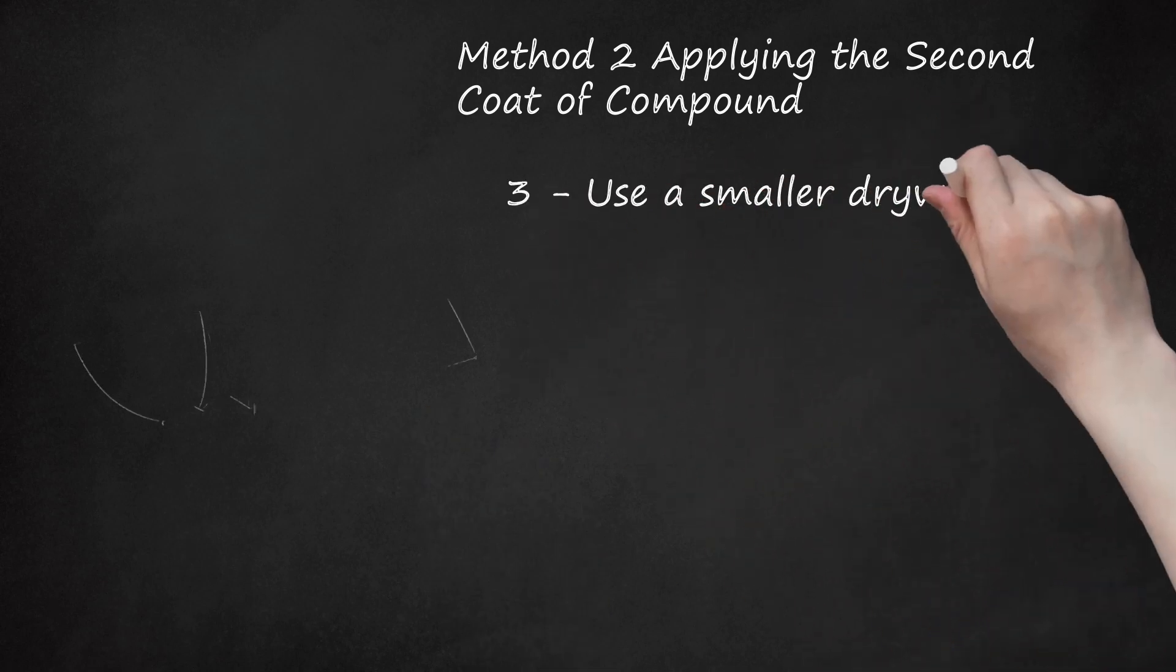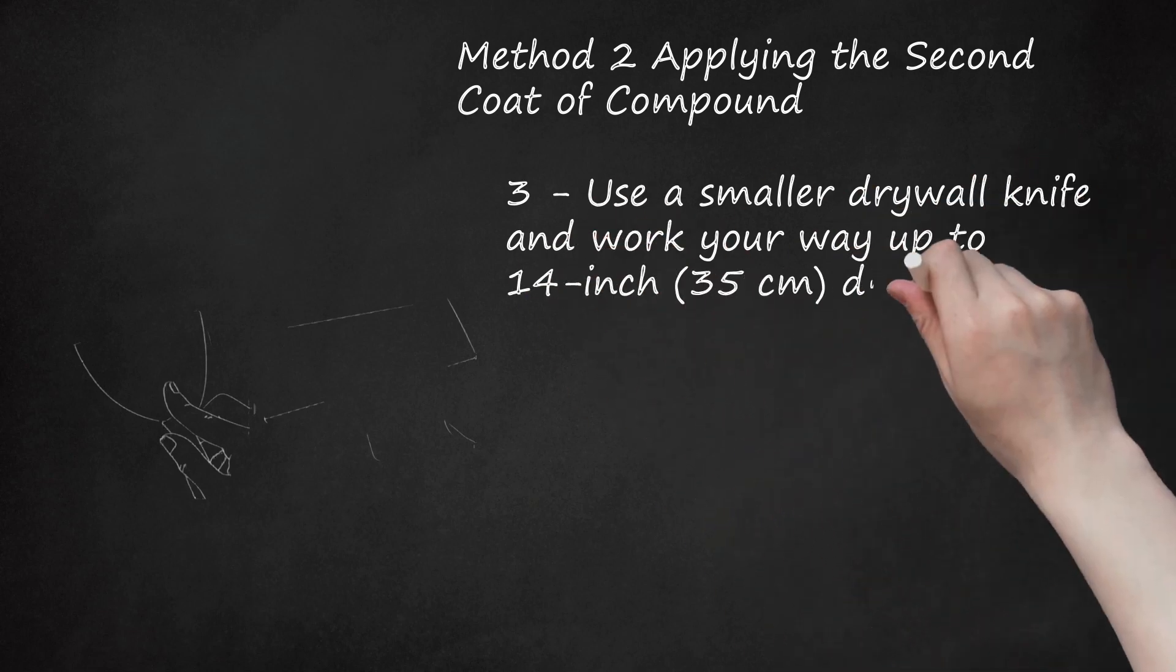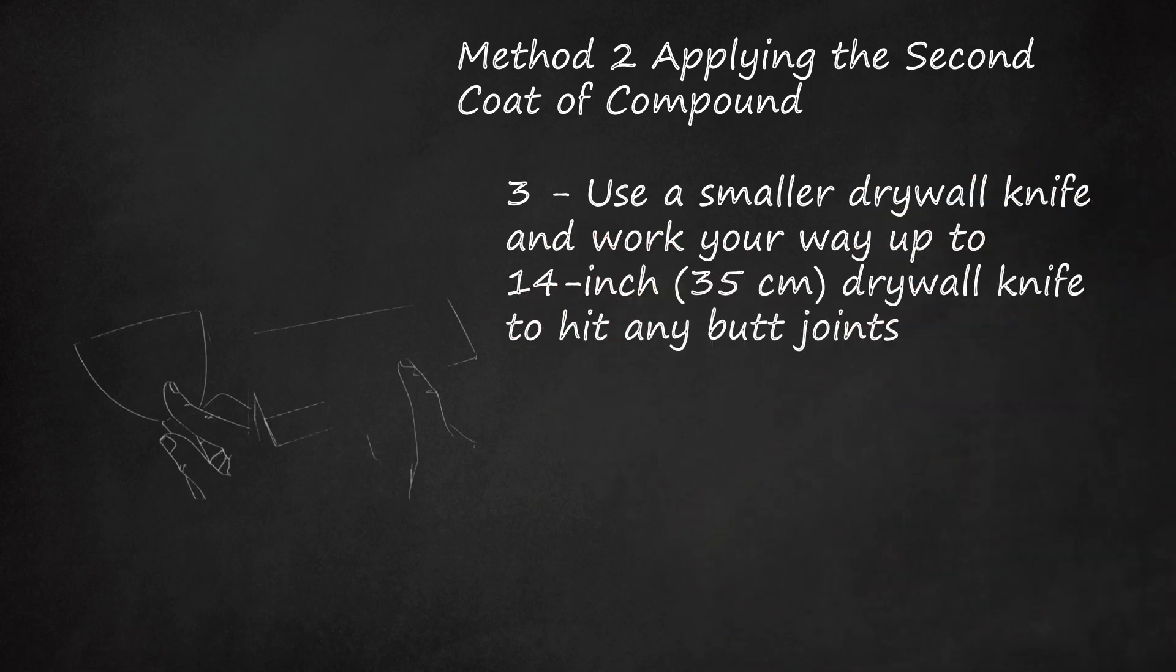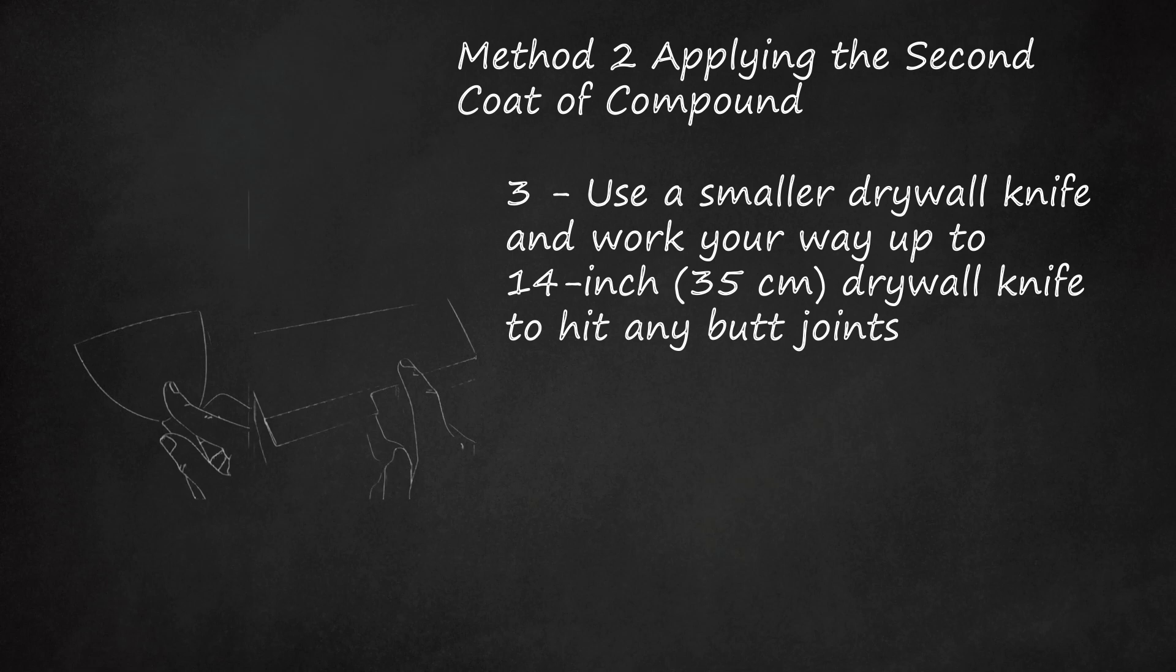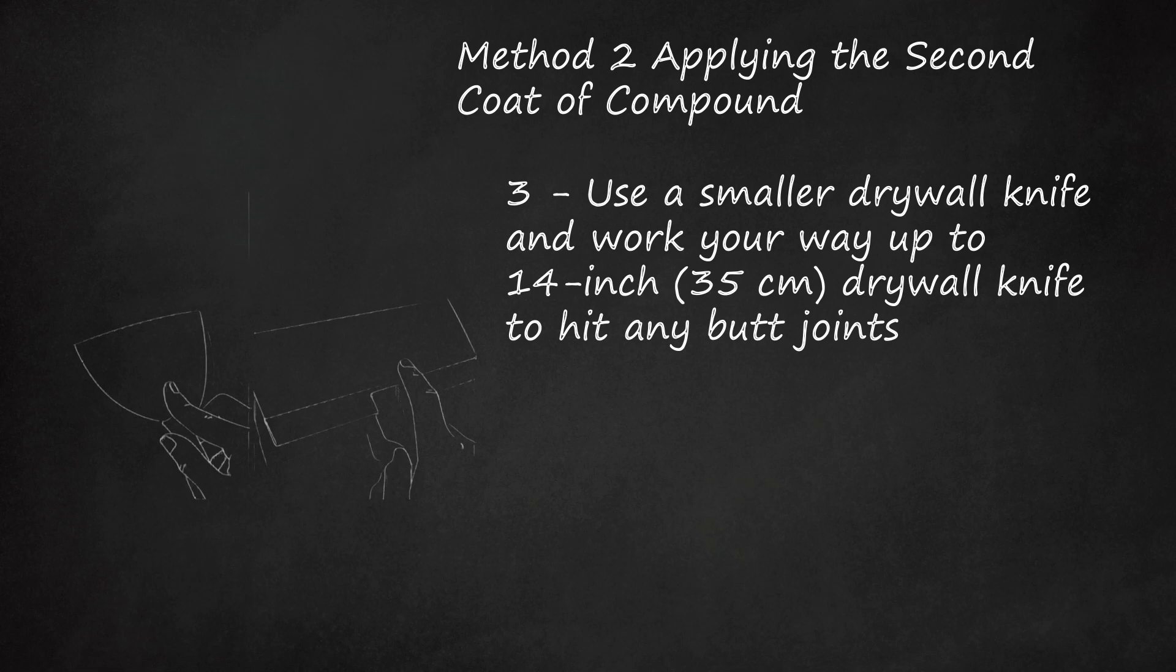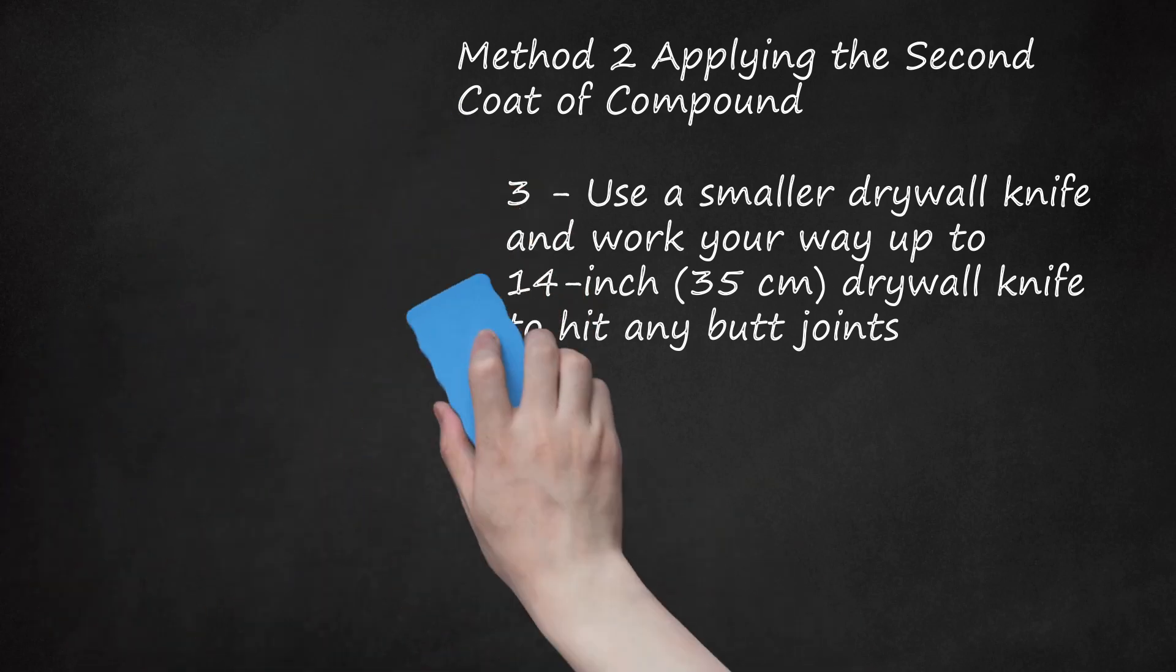Step 3: Use a smaller drywall knife and work your way up to 14-inch (35 centimeters) drywall knife to hit any butt joints. Whereas tapered joints are recessed edges, butt joints are protruding edges. Butt joints take more effort than tapered joints to conceal because you have to thin out a protrusion instead of fill in a gap. Locate the center of the butt joint. On one side of the joint, start mudding with an 8-inch (20 centimeters) drywall knife. Gradually work your way up to a 14-inch drywall knife, hitting only one side of the butt joint. Starting with an 8-inch drywall knife and gradually working your way up, mud the opposite side of the butt joint. When you're done, you should have 24 to 28 inches (60 centimeters to 71 centimeters) of drywall compound in one layer across the length of the butt joint.